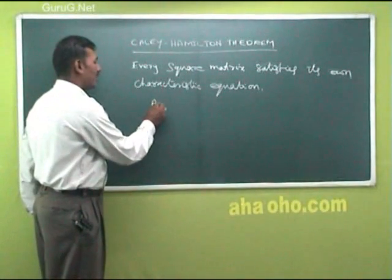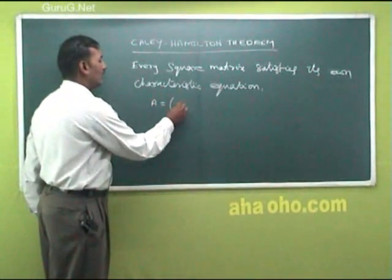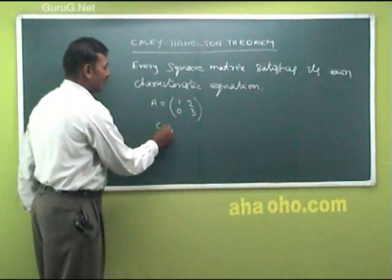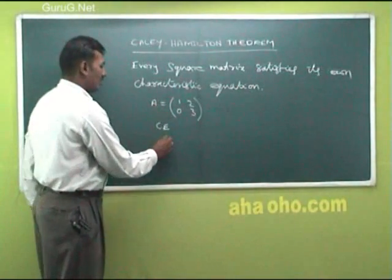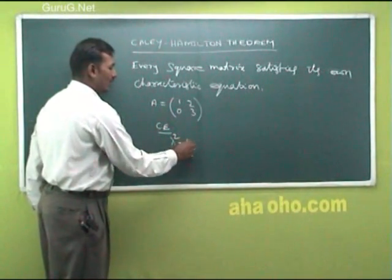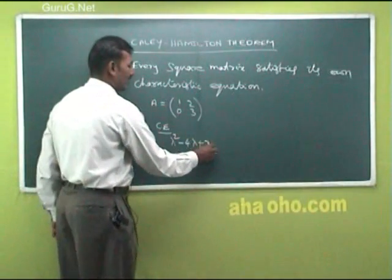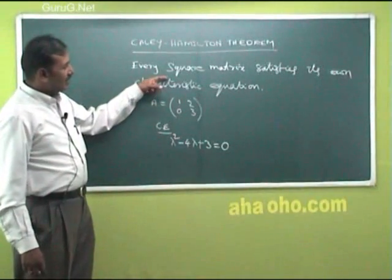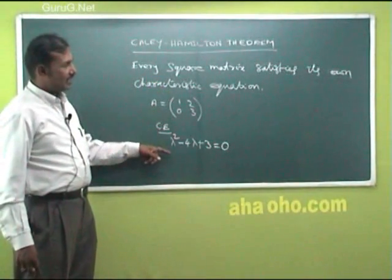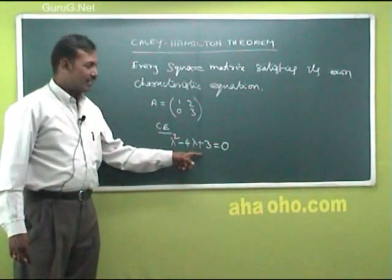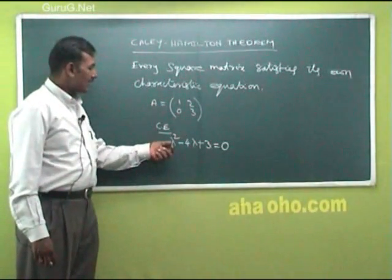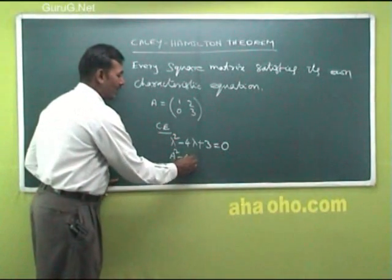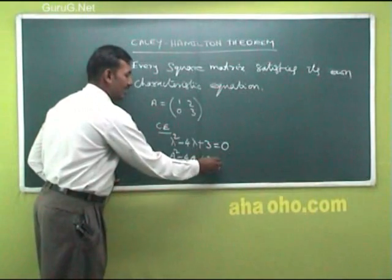For example, suppose A equals the matrix [0, 1; 2, 3]. The characteristic equation will be lambda squared minus 4 lambda plus 3 equals 0. The theorem says every square matrix satisfies its own characteristic equation, so replace lambda by A: A squared minus 4A plus 3 equals 0.